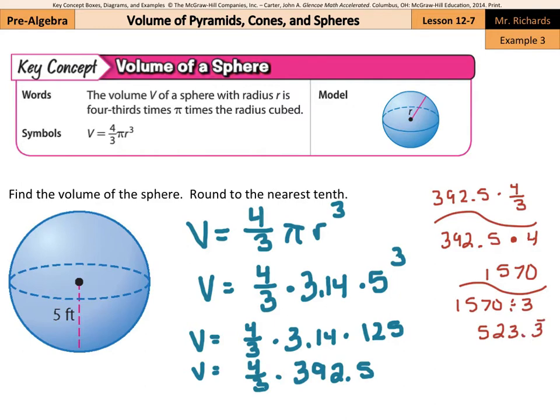So multiplying by four-thirds is the same as multiplying by four, the numerator, then dividing by three, the denominator. So our volume here is equal to 523.3 feet cubed.